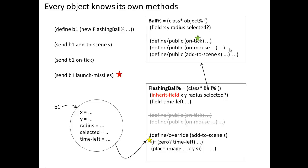Well, it's going to look and say, there's no launch-missiles method in FlashingBall. Let's look in Ball. There's no launch-missiles up here, so it will go look in Object. And of course, Object doesn't have a launch-missiles method either, so you'll get a method not found error.